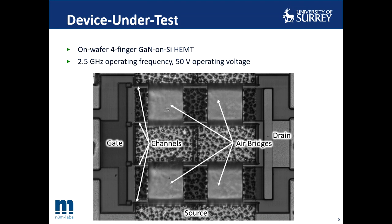Here we have a picture of the device used to perform the thermoreflectance and post-IV measurements. It is an on-wafer gallium nitride on silicon high electron mobility transistor comprised of four fingers, with four air bridges connecting the source metals together. The device was designed to operate at 2.5 gigahertz with minus two volts pinch-off.